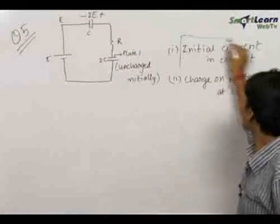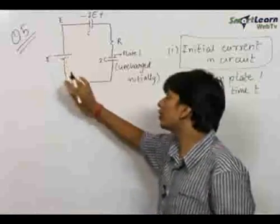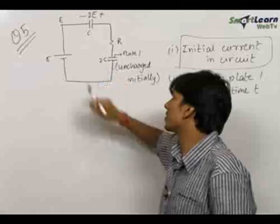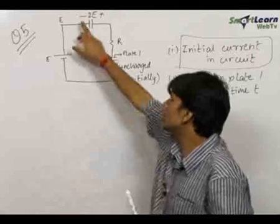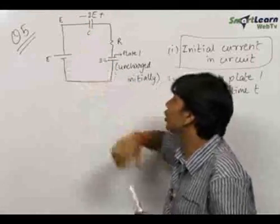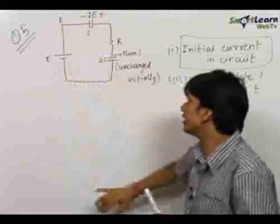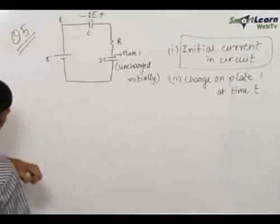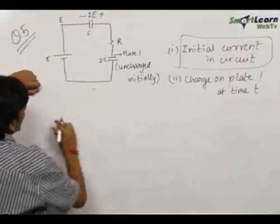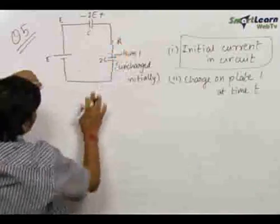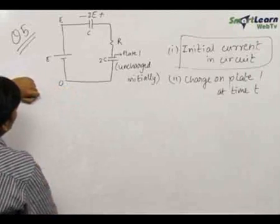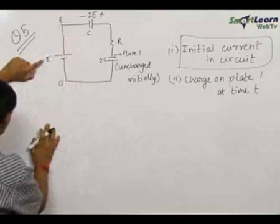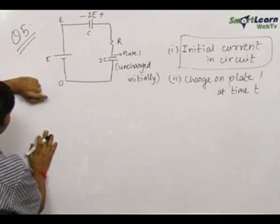We need to first find out the initial current in the circuit. The circuit has a battery of EMF E, resistance R, a capacitor with capacitance C, and a capacitor with capacitance 2C. There is a potential drop across the capacitor C initially — it has some initial charge — while the capacitor 2C is initially uncharged. To find the initial current, we find the potential difference across the resistor. Let the potential at this point be zero; the potential at the other point will be equal to E.